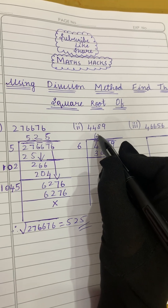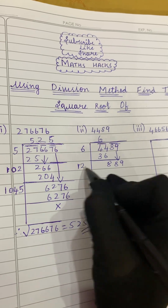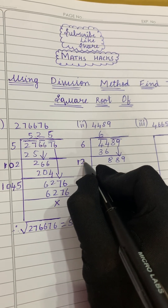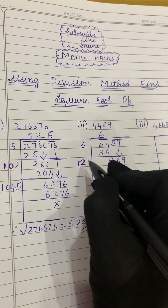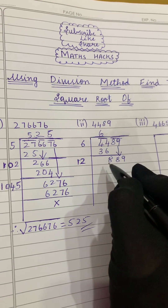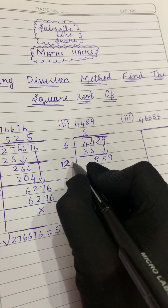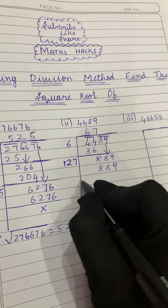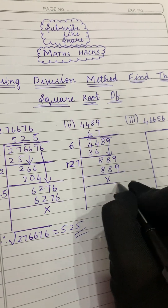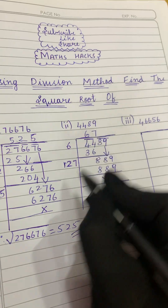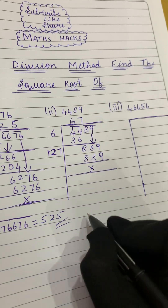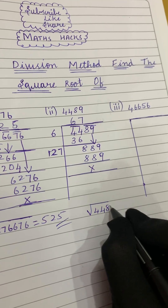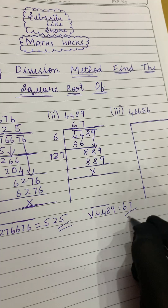We double the quotient: 6 × 2 = 12. We have two digits and three digits, so we add a digit to 12. We need a number such that 12_ × _ = 889. That's 127 × 7 = 889. Subtracting gives remainder 0. Therefore the square root of 4489 is 67.